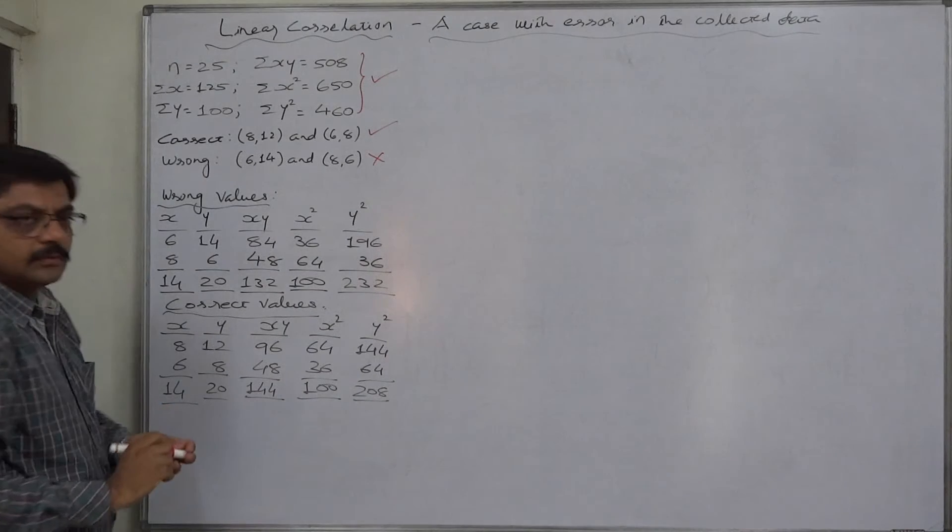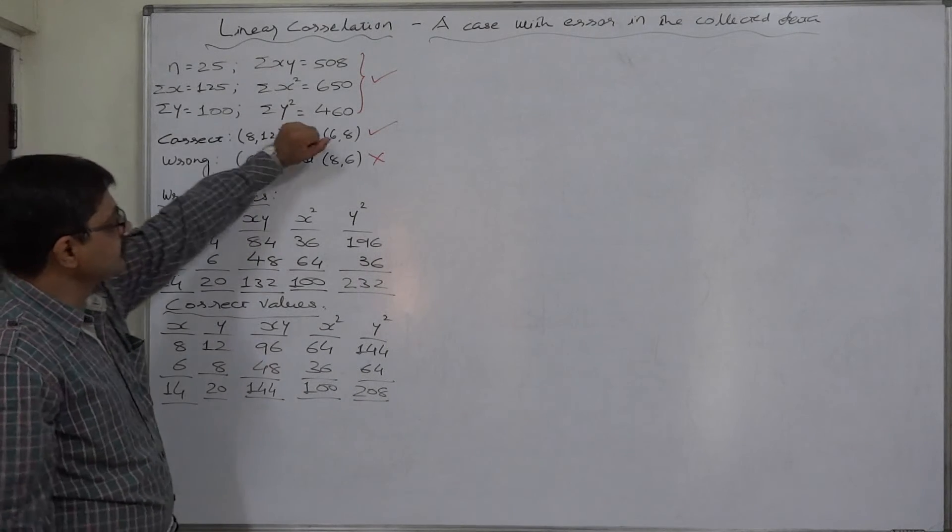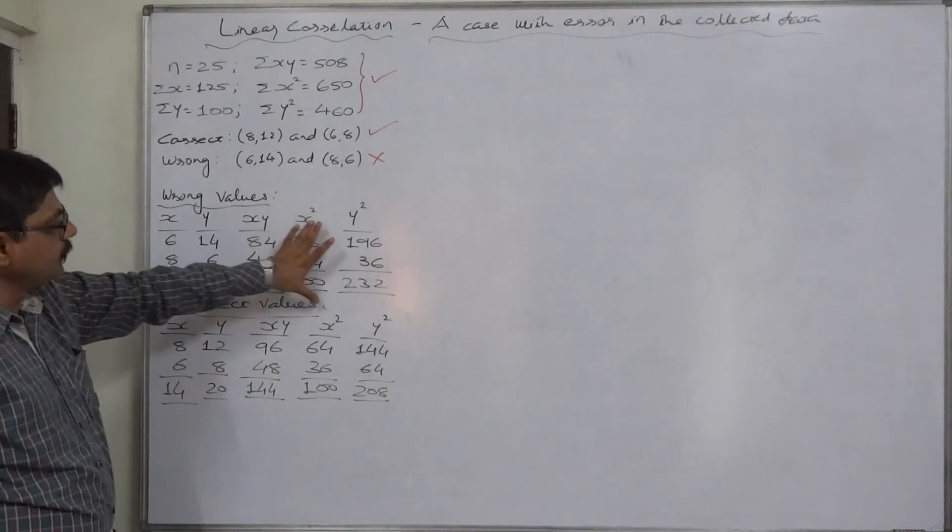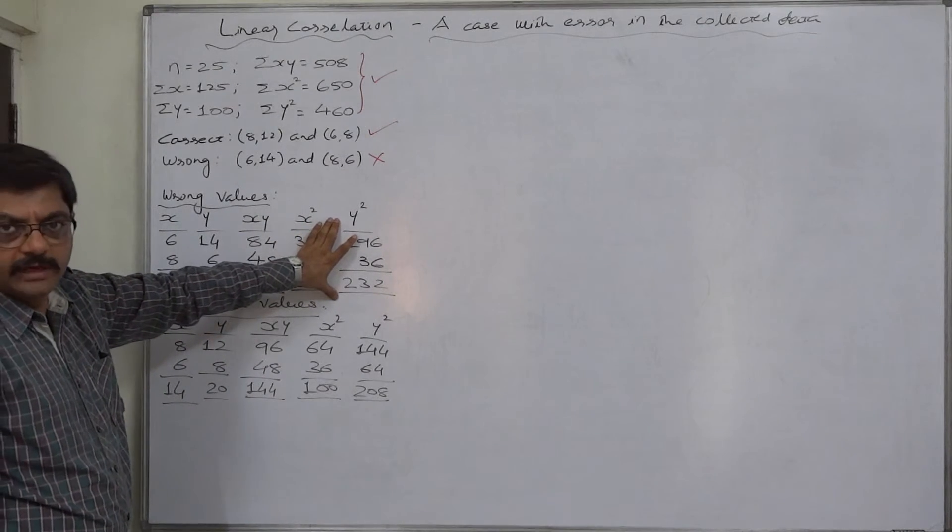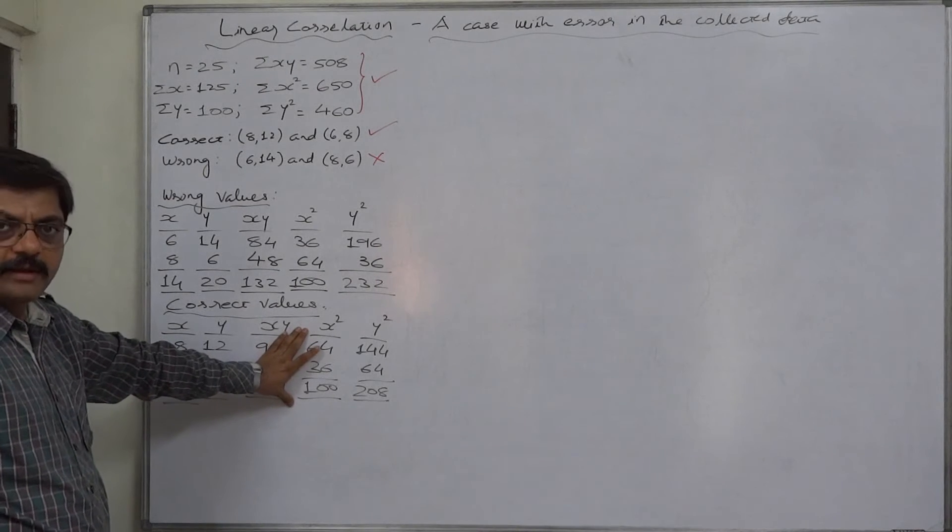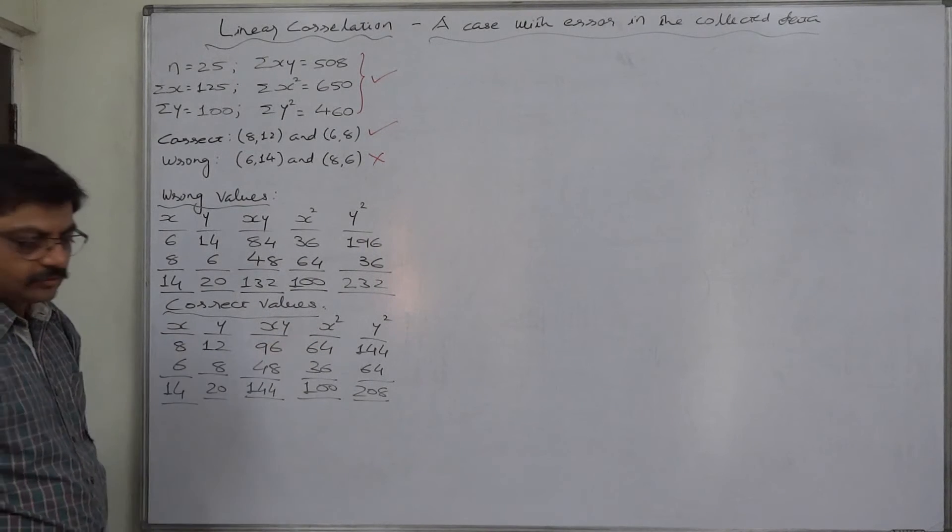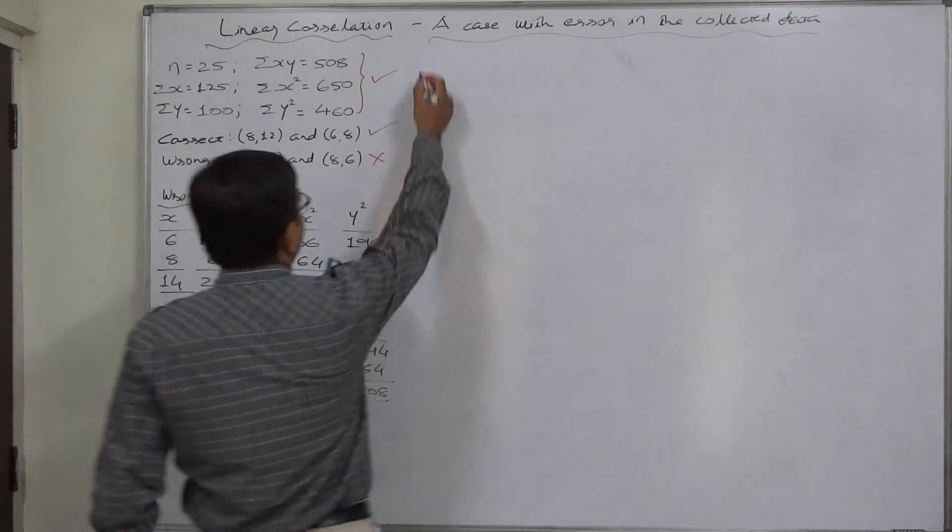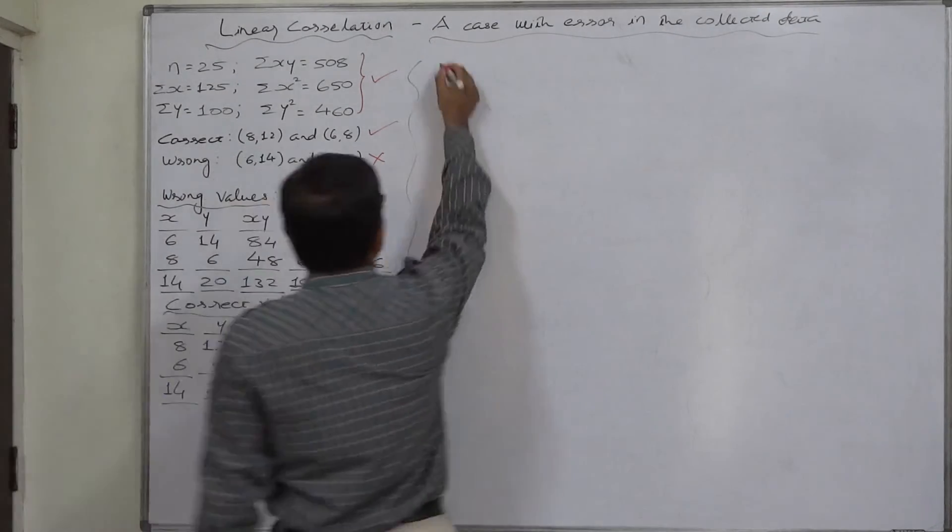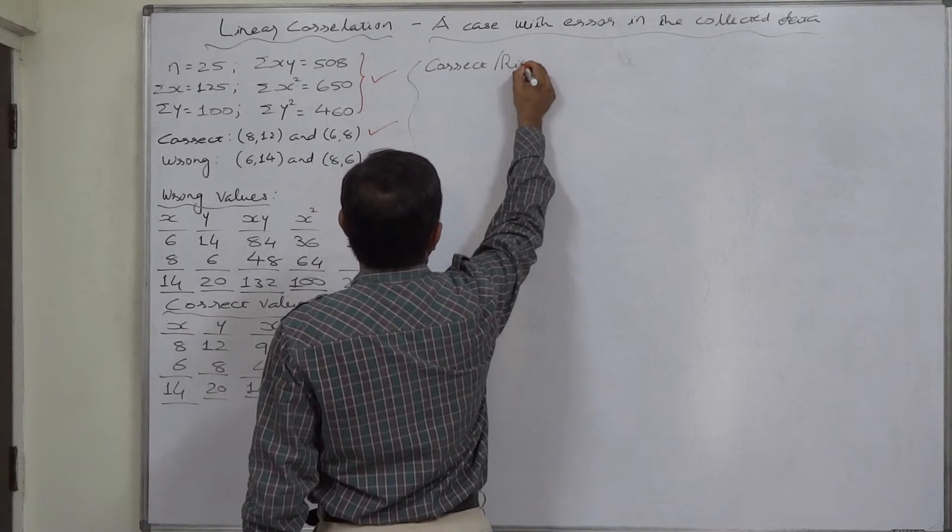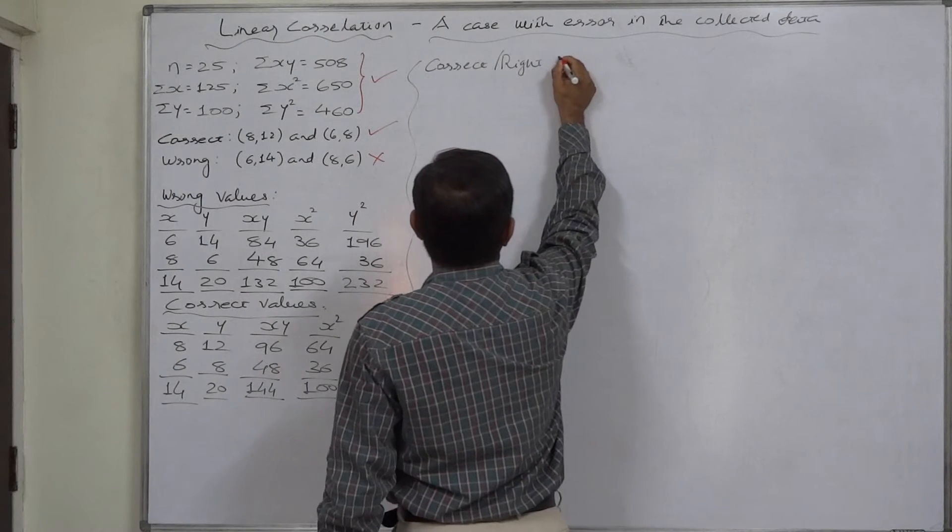Now, first of all, we have to rectify these summations. What is the simple rule of rectification? Remove the effect of wrong values and add or include the effect of correct values. So, first of all, let us make the corrections of all summations. Correct or right summations or totals.